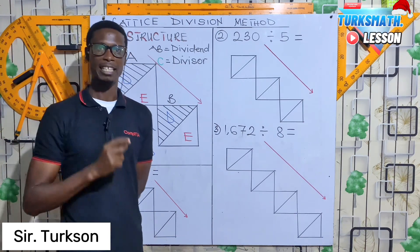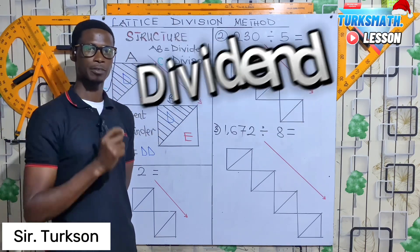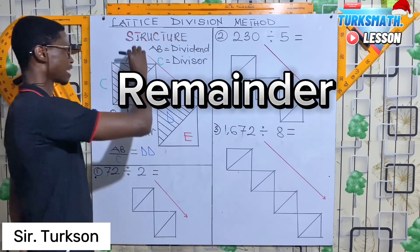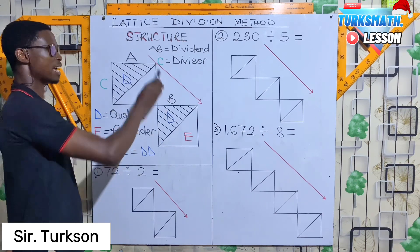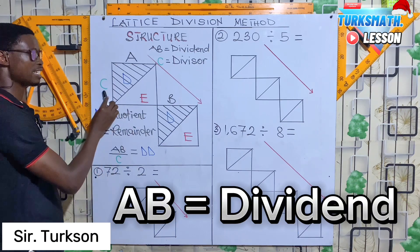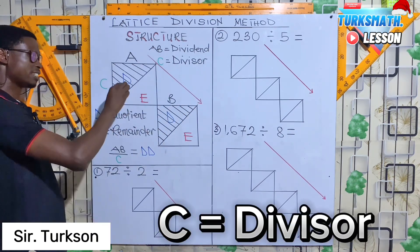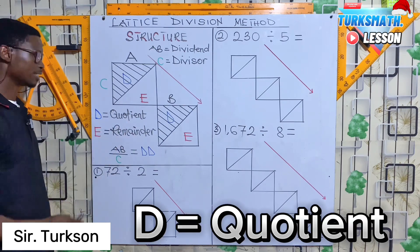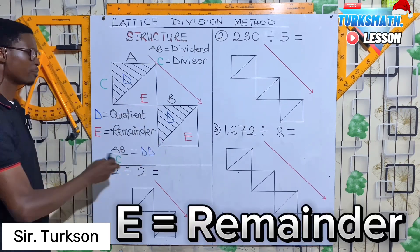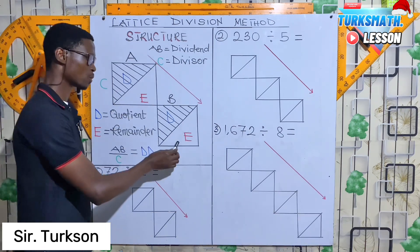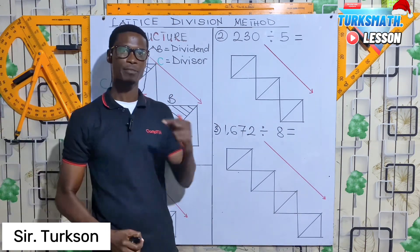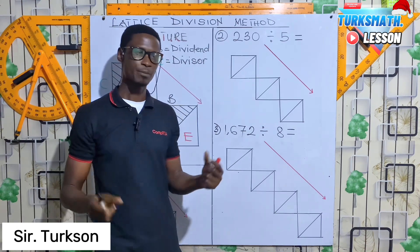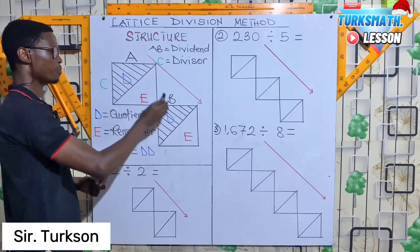Division has parts: dividend, divisor, quotient, and remainder. When you look at the structure here, A and B form the dividend, C is the divisor, the D values are the quotient, and E gives us the remainders. With the lattice division method, wherever you have a remainder, that remainder tends to be our tens.